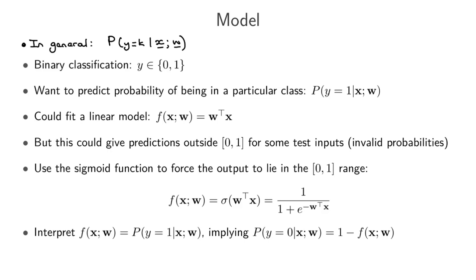One option would be to fit a linear model where we have some parameters, take the dot product of those parameters with our feature vector, and use this output to directly fit the probabilities. The problem with this approach is that the output of the model will be outside the range from 0 to 1, which means you won't get a valid probability. As a reminder, in normal linear regression — for example predicting house prices — values can be something like $10,000, which is definitely not in the range between 0 and 1.